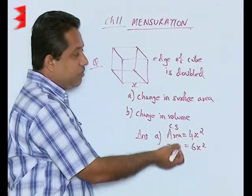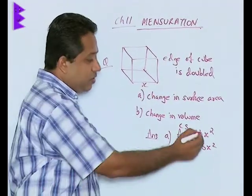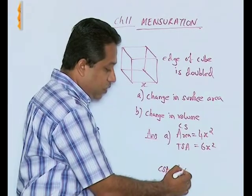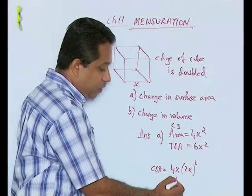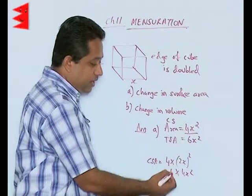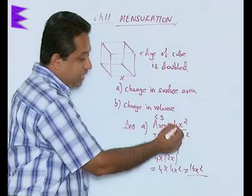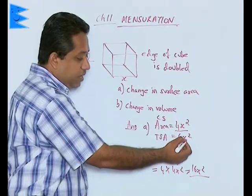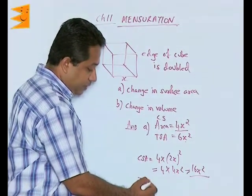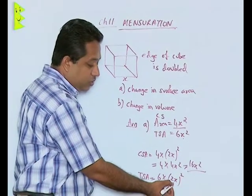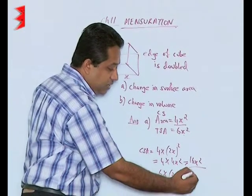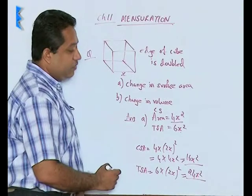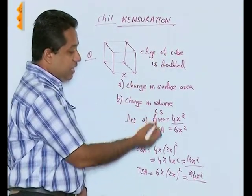When the edge is doubled from x to 2x, the curved surface area becomes 4 × (2x)² = 4 × 4x² = 16x². So 4x² has become 16x², meaning the area increases 4 times. Similarly, the total surface area becomes 6 × (2x)² = 6 × 4x² = 24x². Again the area increases by 4 times. So the change in surface area: if the edge is doubled, the area becomes 4 times the original.